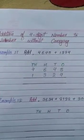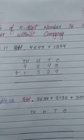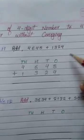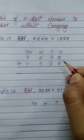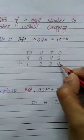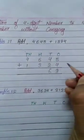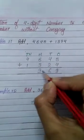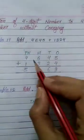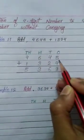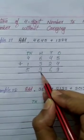We need to add these 2 numbers, so we put the addition symbol here. We will add the respective places. First, the 1s place: 5 plus 4 is 9. Then the 10s place: 4 plus 2 is 6. The 100s place: 6 plus 3 is 9. And the 1000s place: 4 plus 1 is 5. So the sum of 4,645 and 1,324 is 5,969.